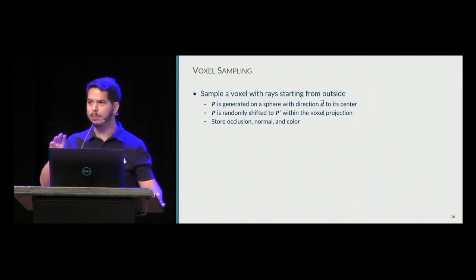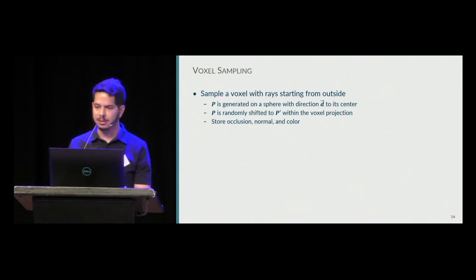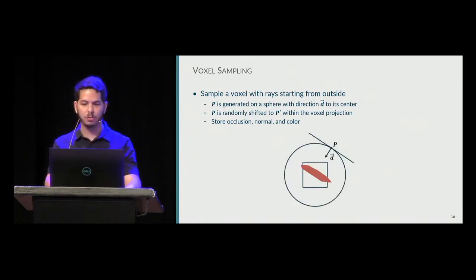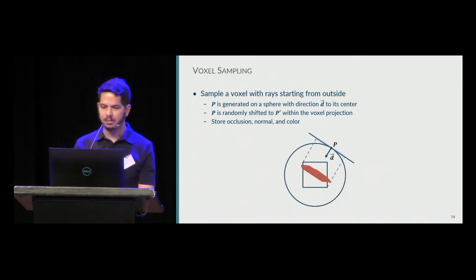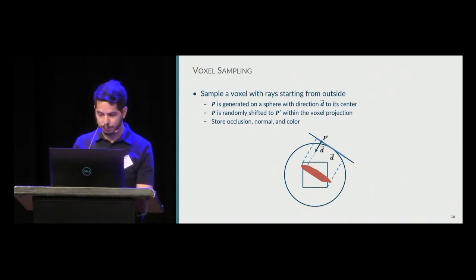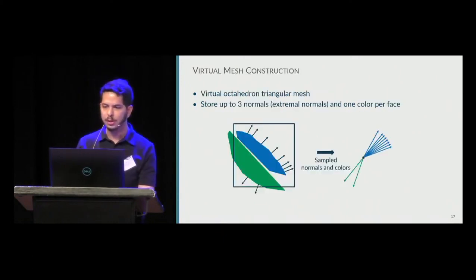The first step is voxel sampling. We want an unbiased sampling of the voxel content. Given a voxel with an object inside, we sample point P on the sphere surrounding the voxel with direction D toward the center, then project the voxel onto the plane defined by P and D, and randomly shift P to P' keeping the direction D. We shoot a ray from that position and direction. If it hits, we set the occlusion to 1 and keep the normal and color of that hit. Otherwise, we set the occlusion to 0.